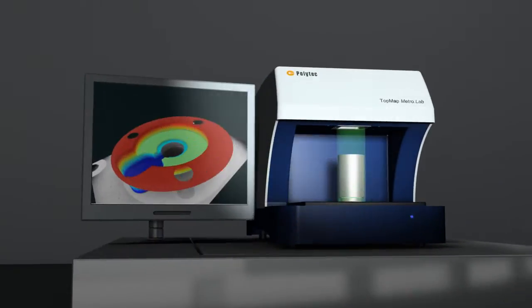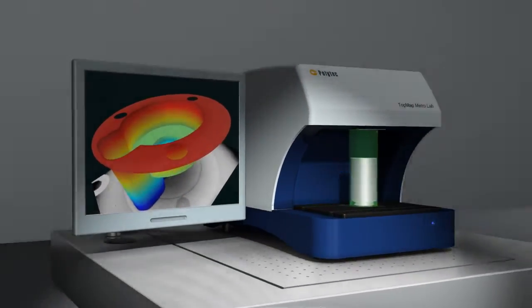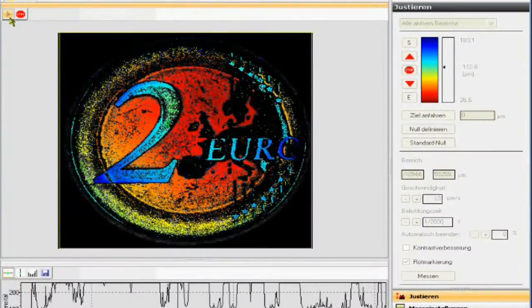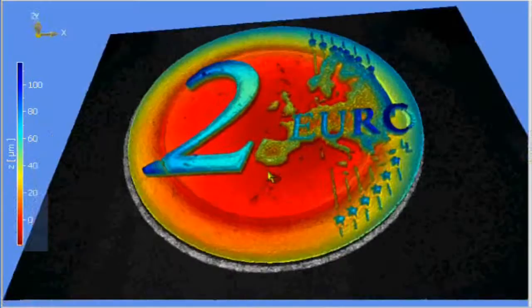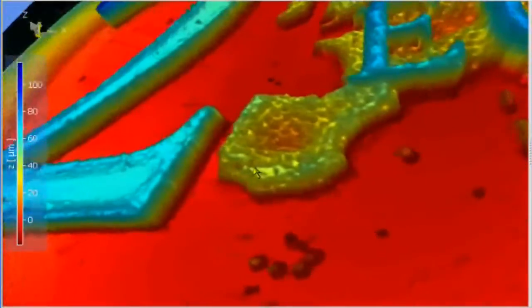Polytech's TopMap systems measure vertical height with sub-nanometer resolution and very low measurement uncertainty. They allow large surface area measurements up to several centimeters across, quickly and with high reproducibility.